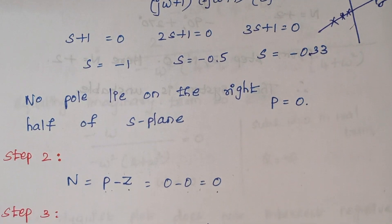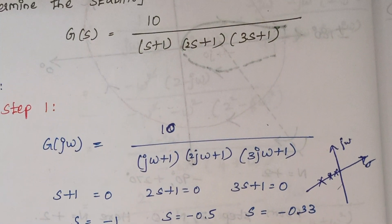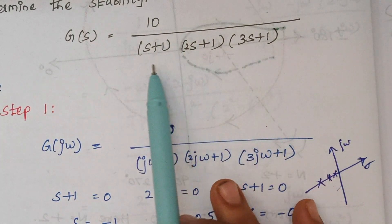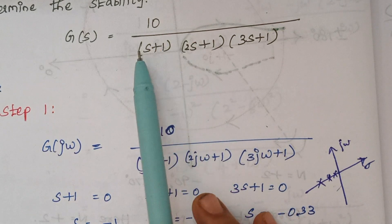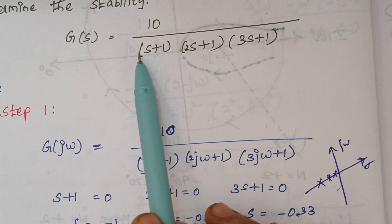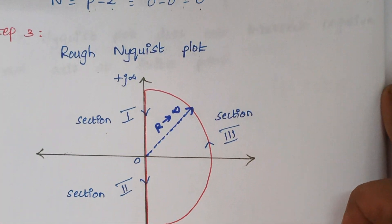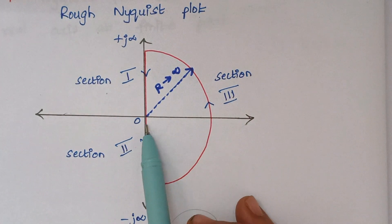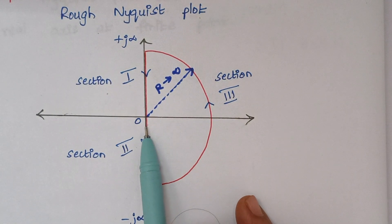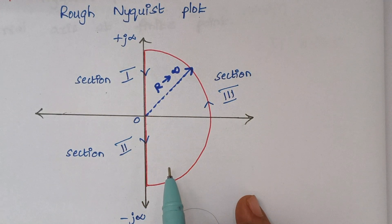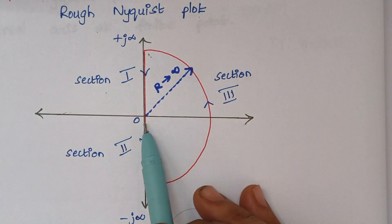Step 3 is drawing a rough Nyquist plot. When you look at the problem, there are no poles at origin — there is no individual S term in the denominator. The procedure for drawing the Nyquist plot is a bit different if we have a pole at origin, as that pole should not be covered and we would have a small semicircle. But here there are no poles at origin, so we draw directly which covers the origin also.